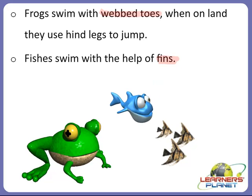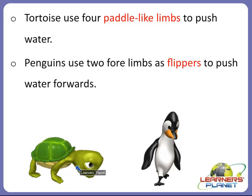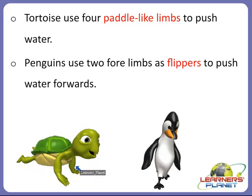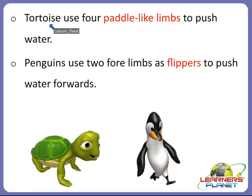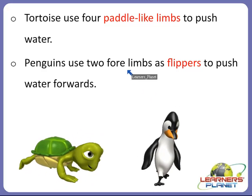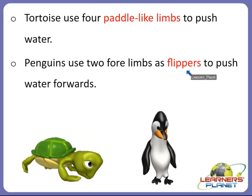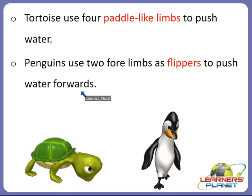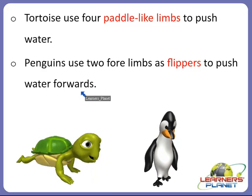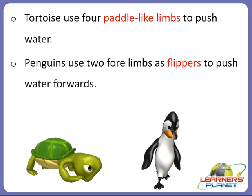Tortoises use four paddle-like limbs to push themselves through water, as you can see in this picture. Penguins use two forelimbs as flippers to push water forward — you can see the flippers in this picture. So different types of movement can be observed in water animals, land animals, and birds.